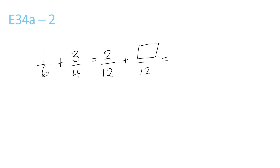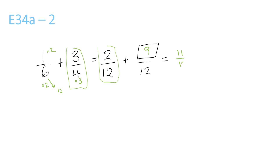6 and 4 — the lowest number they both go into is 12. 6 times 2 is 12, and 4 times 3 is 12. So we have to times the top and bottom by 2, so we get 2 over 12. And we have to times the top and bottom of this one by 3, so 9 over 12. 2 plus 9 is 11 over 12.